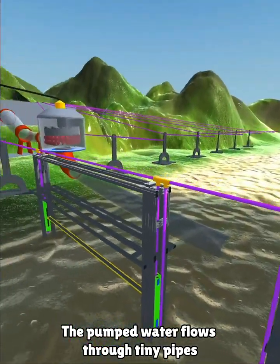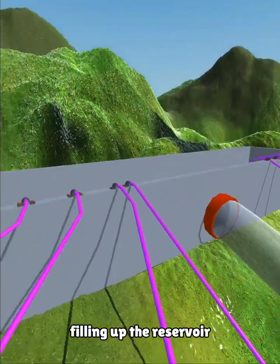The pumped water flows through tiny pipes, following the direction of the arrows, filling up the reservoir.